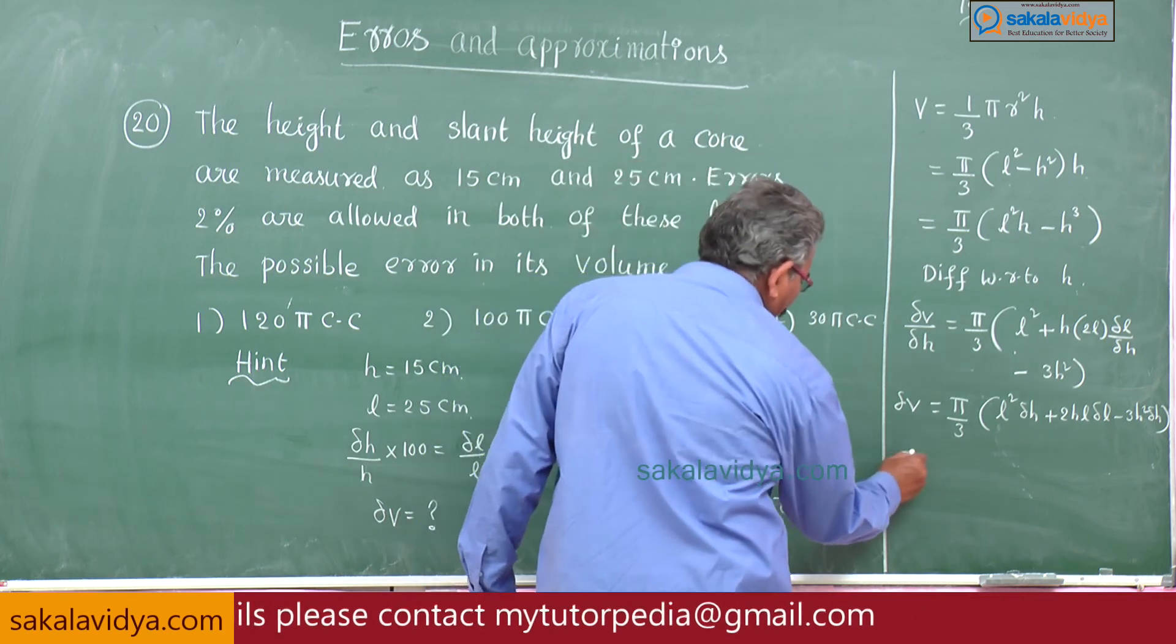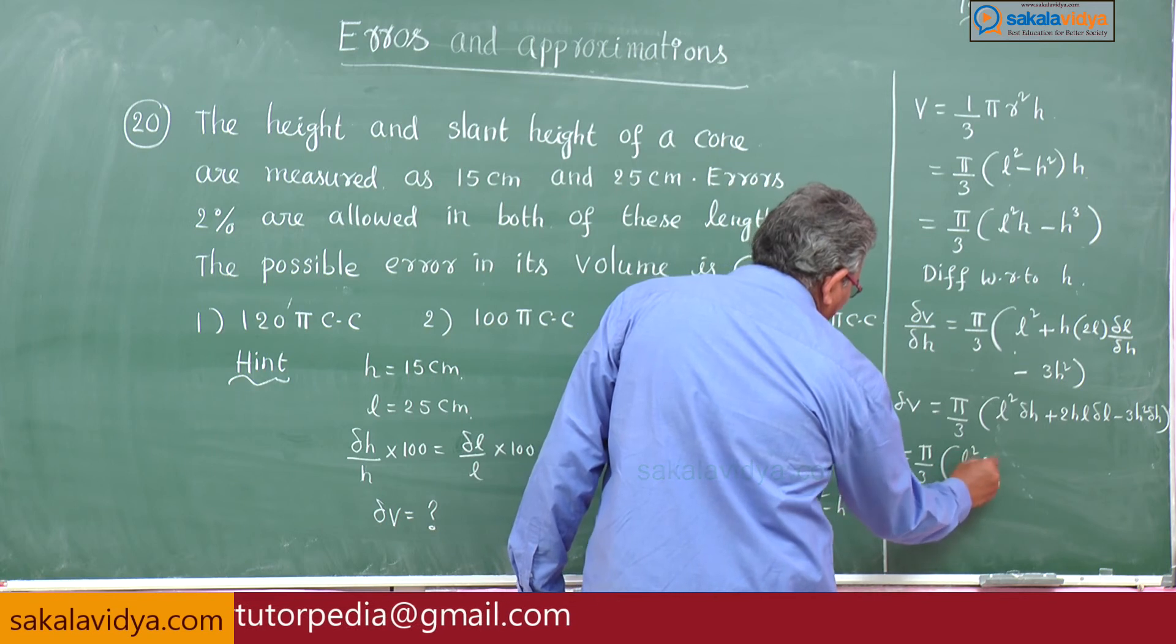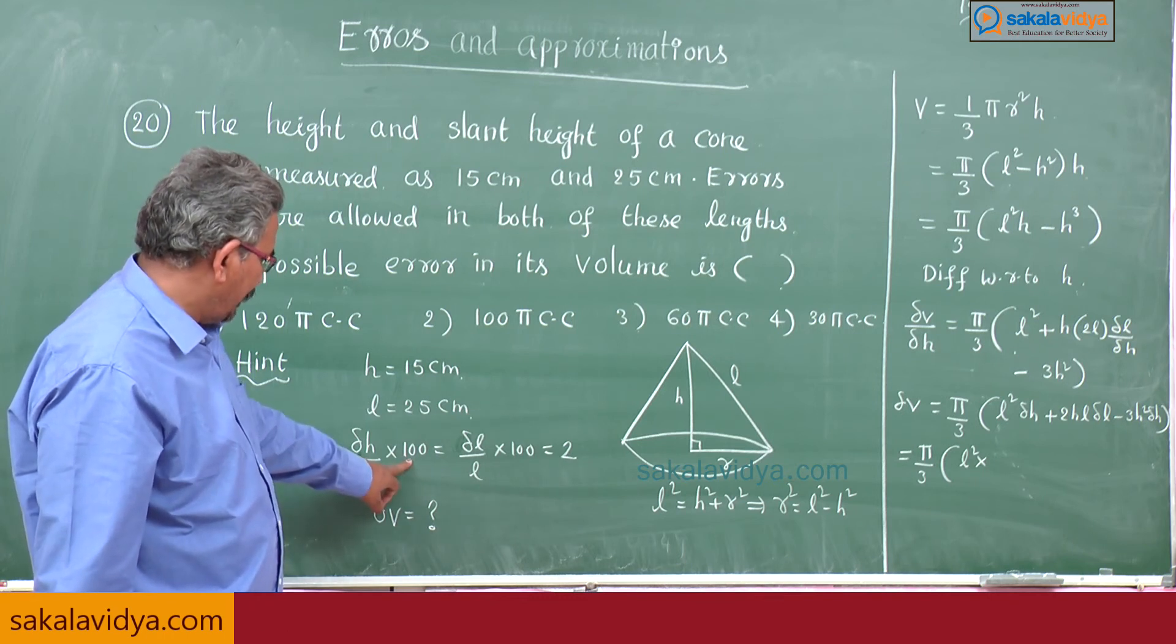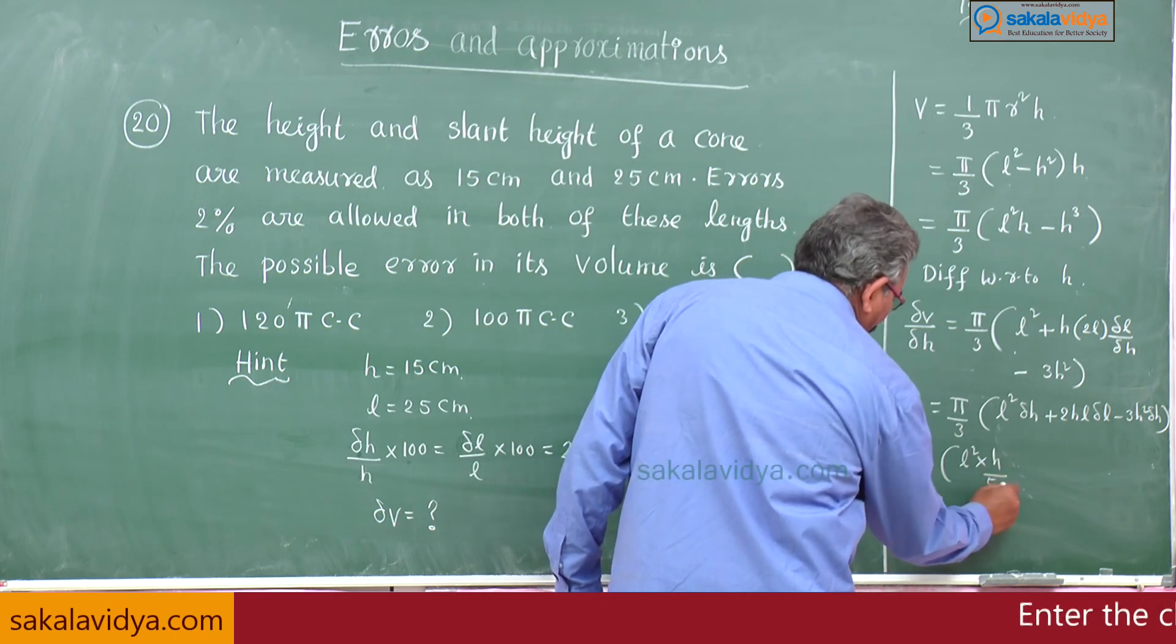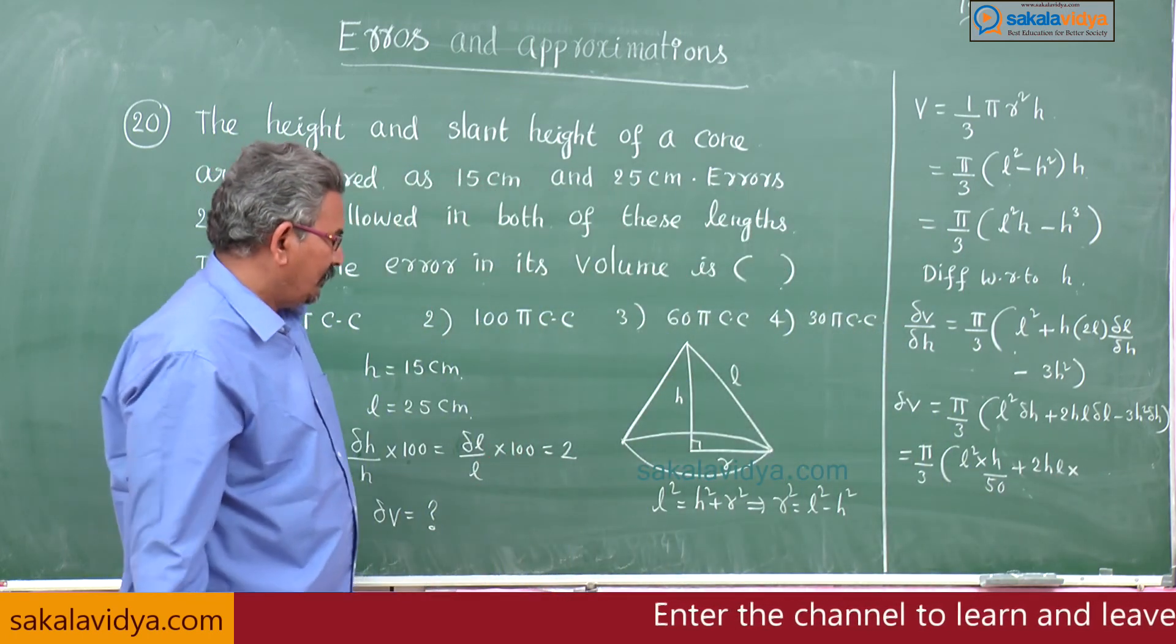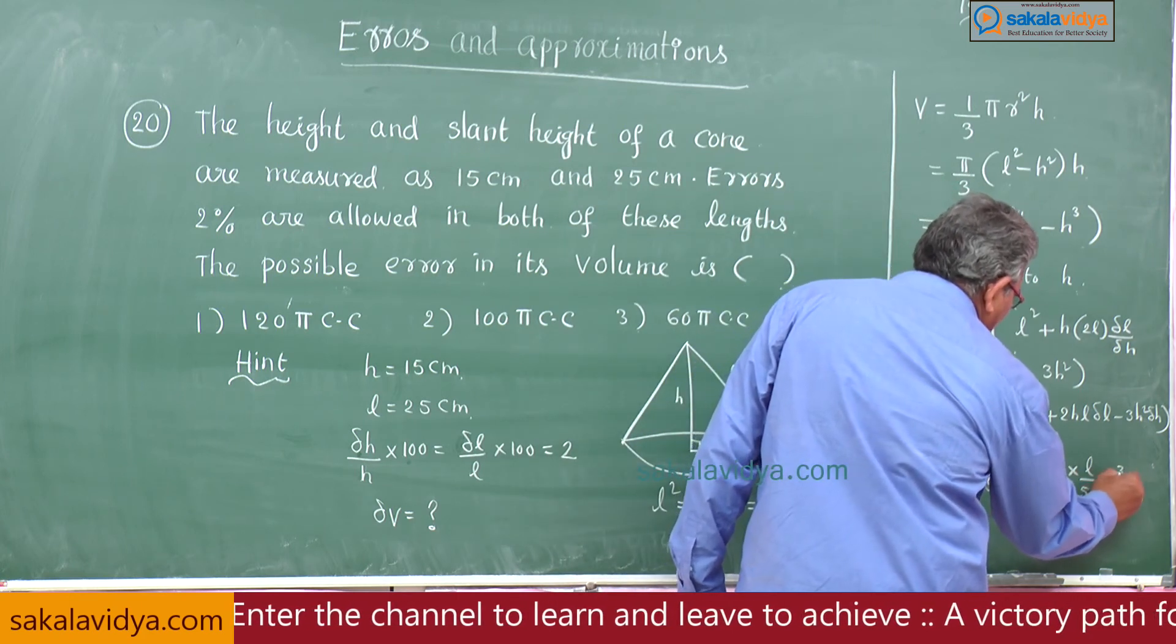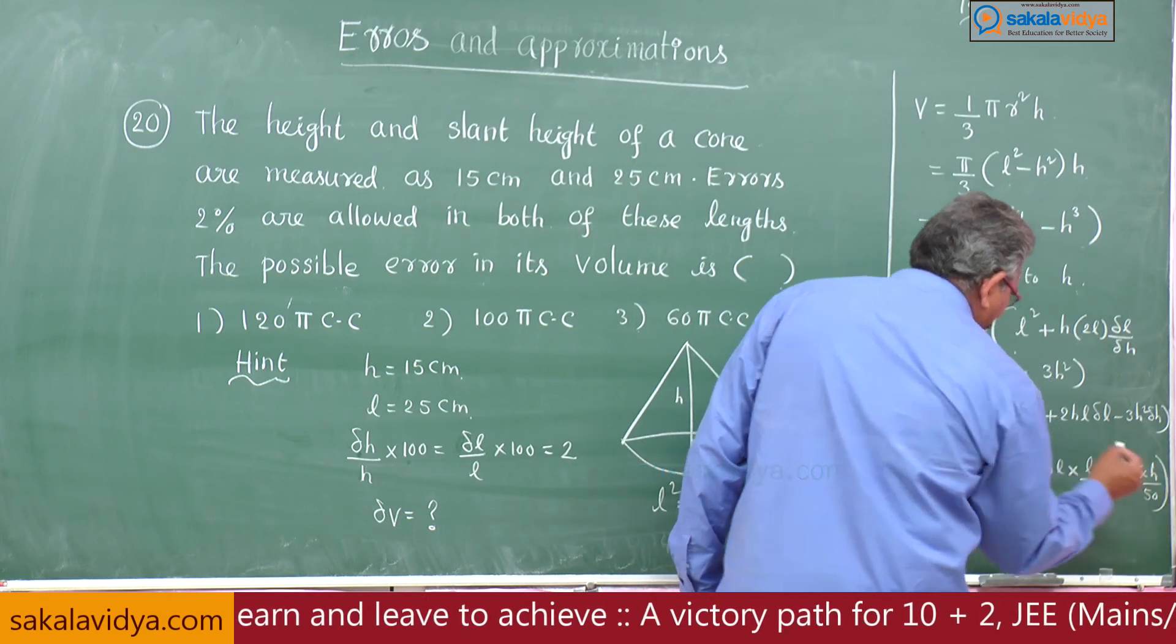Substituting π by 3, very interesting problem. l square into delta h is 2h by 100, which is h by 50, plus 2hl into same here also l by 50, minus 3h square into h by 50.